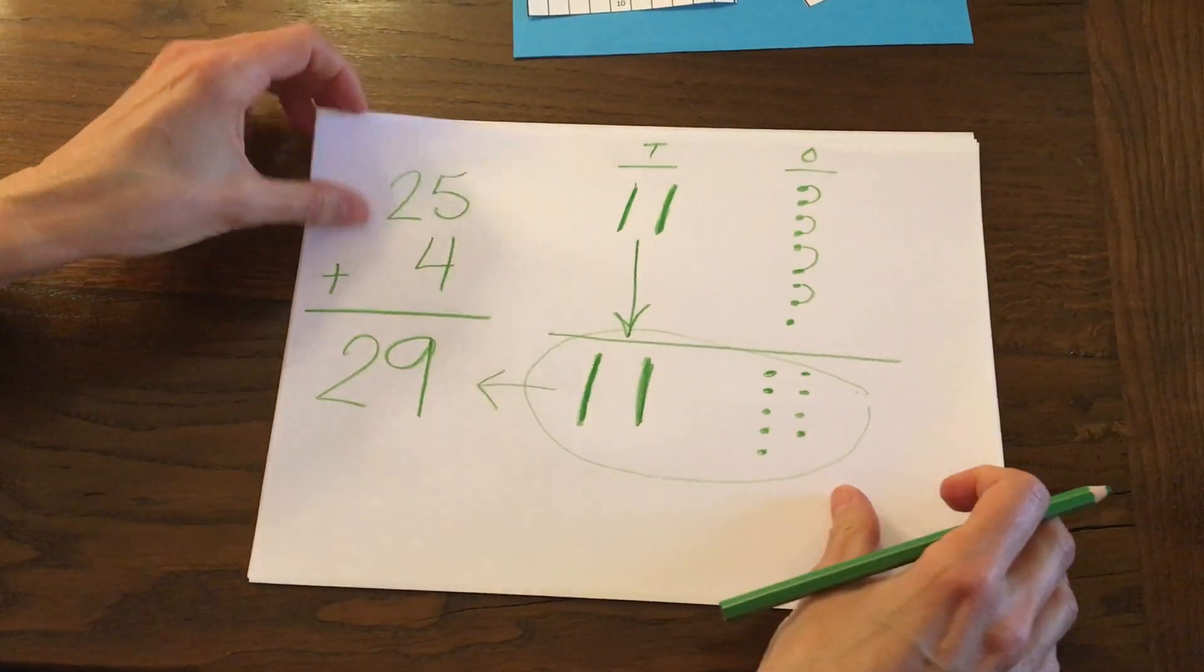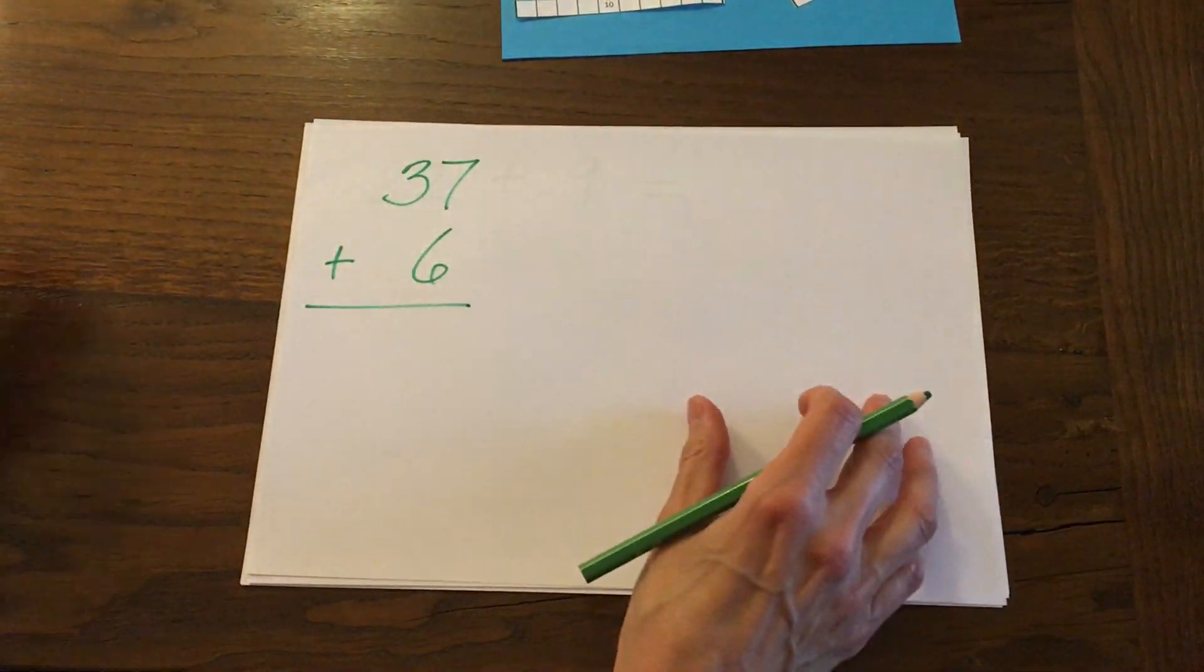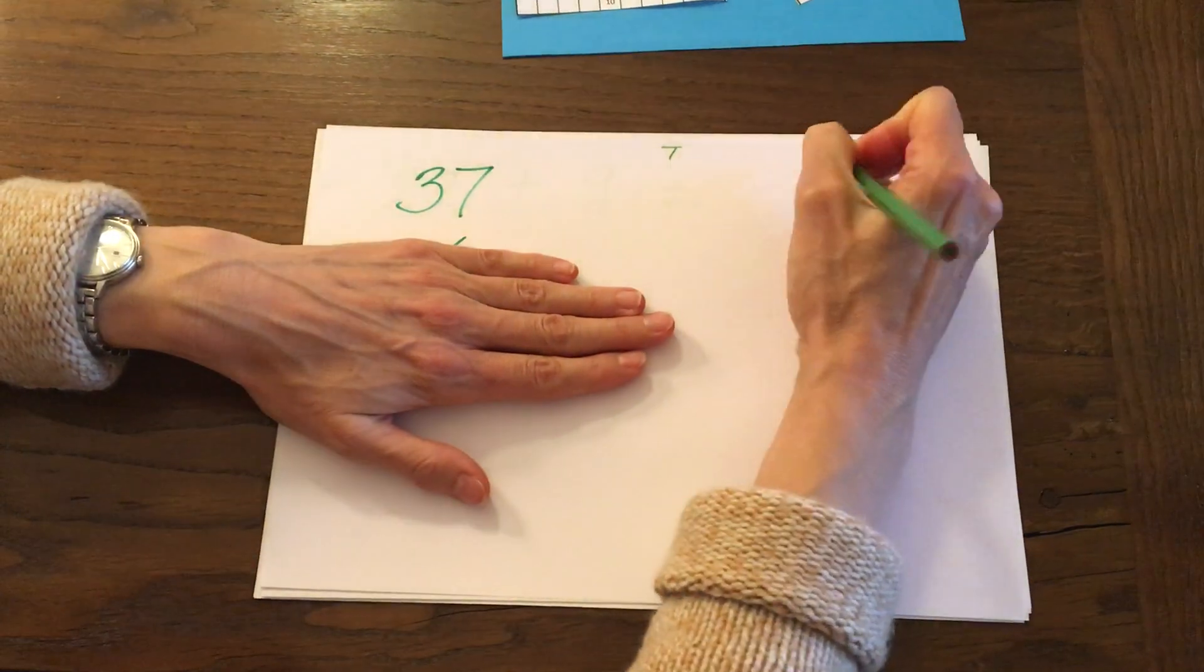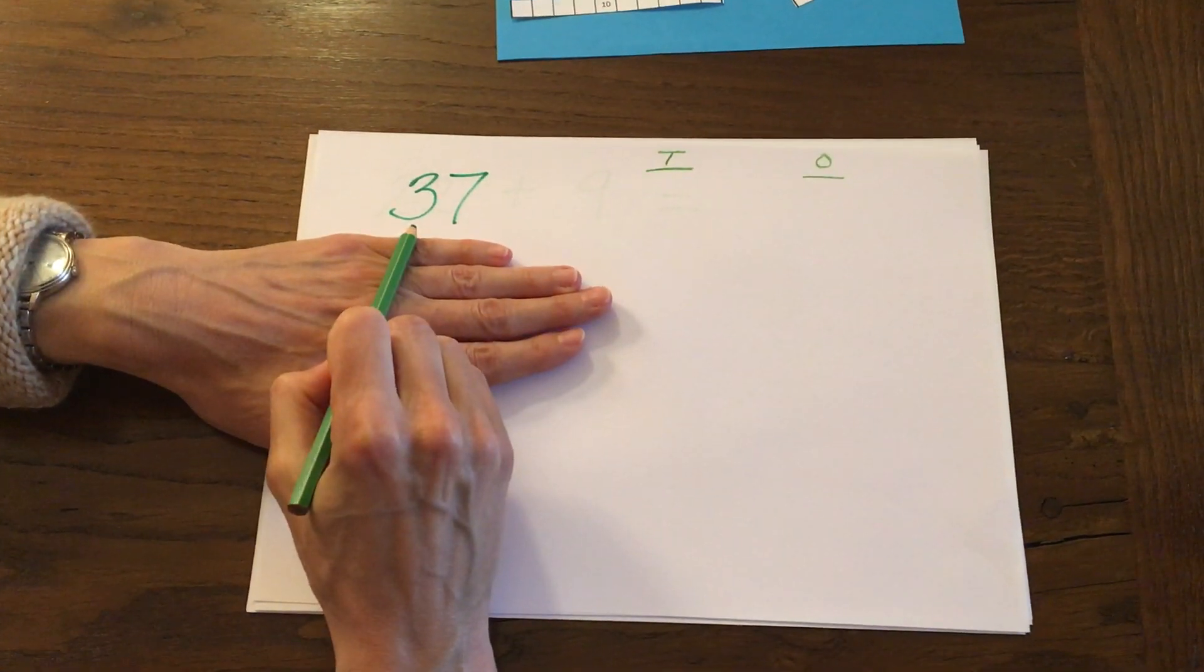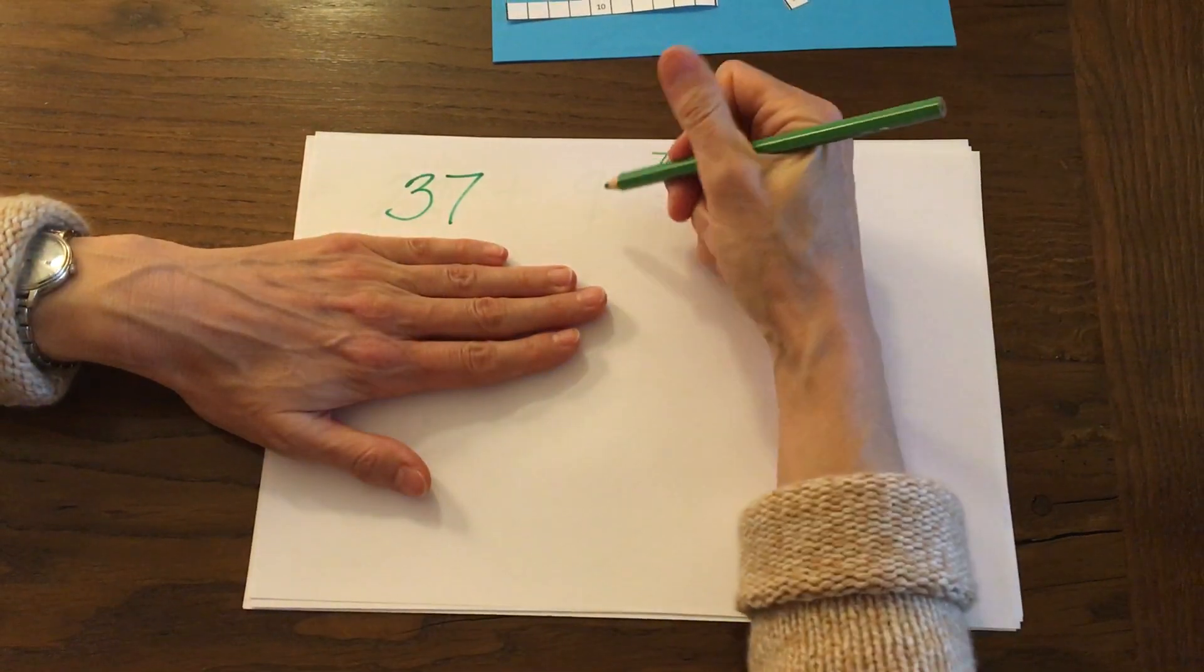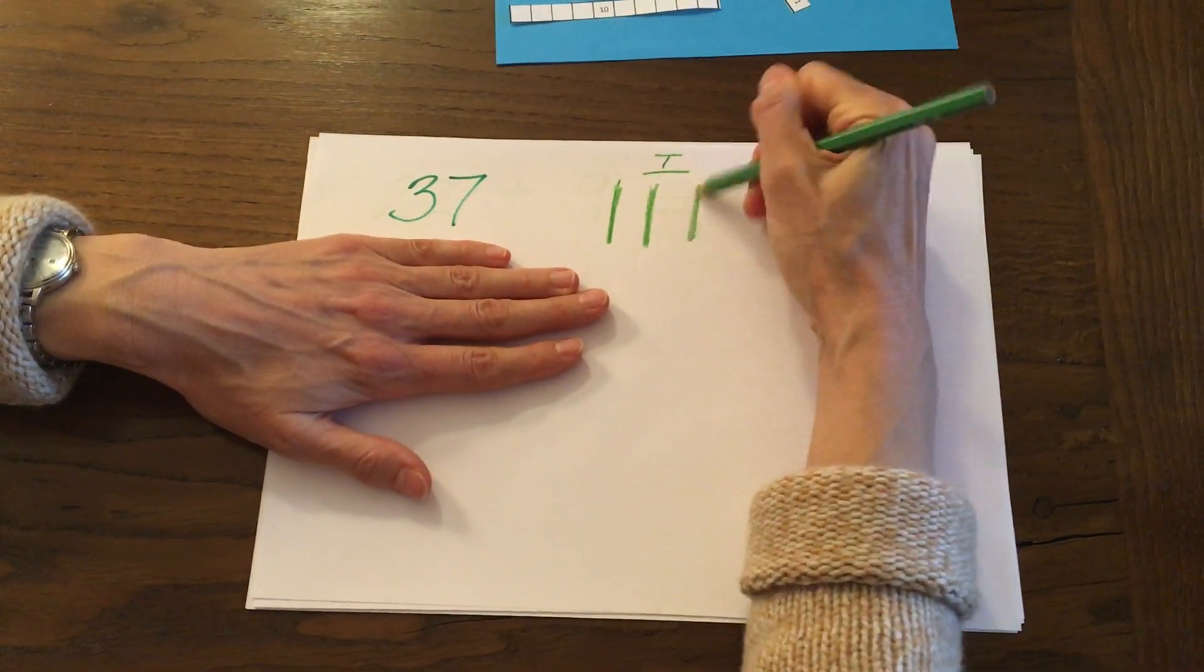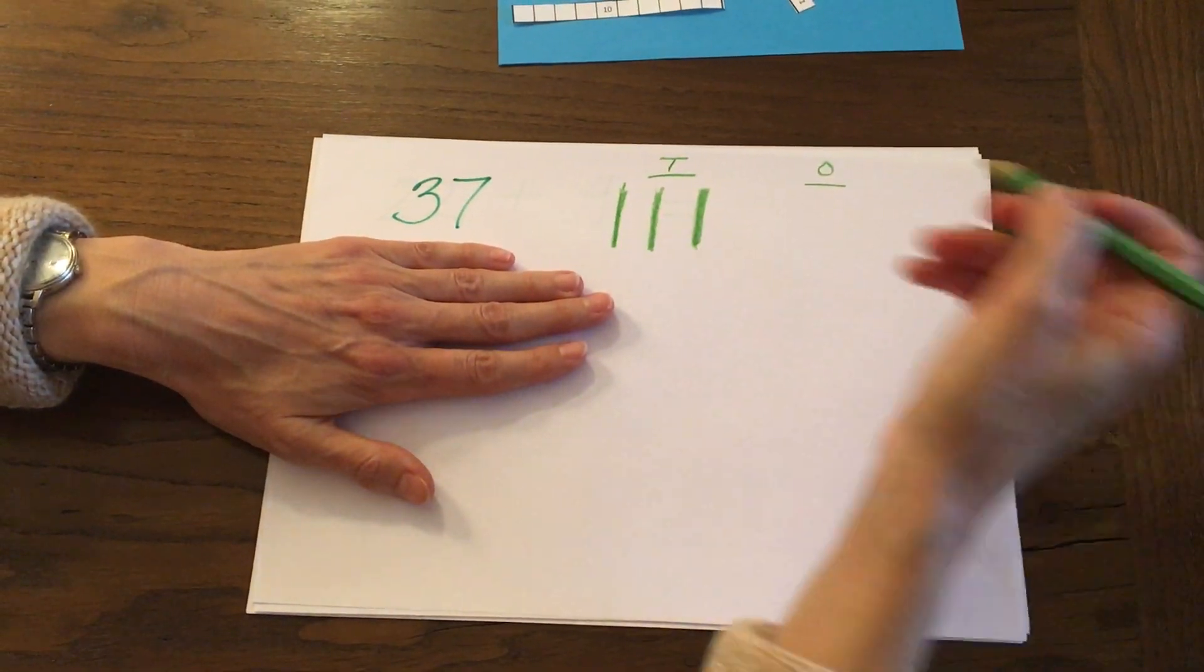Let's try another one. This time it says 37 plus 6. So let's start with our tens and our ones up here. How many tens in 37? Three. So I'm going to draw three tens blocks. One, two, three. How many ones in 37? Seven.